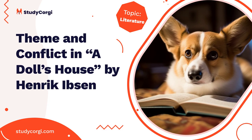Torvald found the letter. He got very angry at Nora and decided that Nora would not be looking after the kids because she is a bad influence. Moments later, Nora received a letter from Krogstad. He says that he takes back everything he said about the forgery. Torvald's rage was gone, and he decided to forget everything that happened. But it was too late. Nora decided to leave Torvald. She says that she is tired of being treated like a toy, a plaything, a doll.